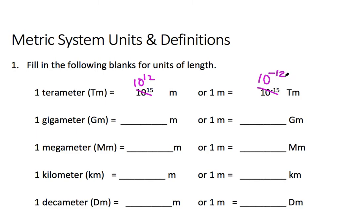Now I'm going to introduce to you, the terameter. So when you have a prefix, you can just substitute it in. So one terameter is 10 to the 12, because that's what terra means, meters. So I'm just using substitution. When you invert it and you set this equal to 1, then you're effectively dividing both sides by 10 to the 12. So that's why we get 10 to the minus 12 here.